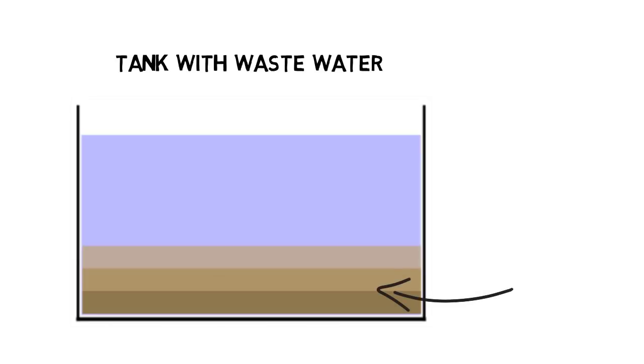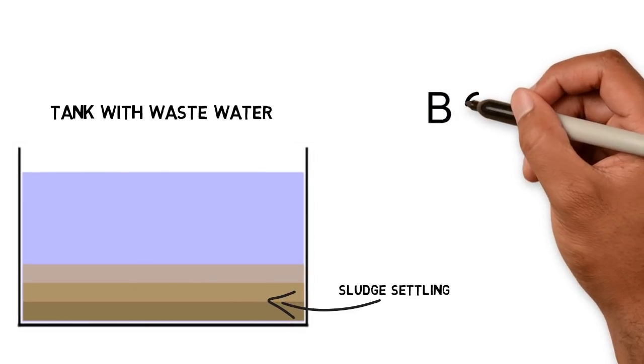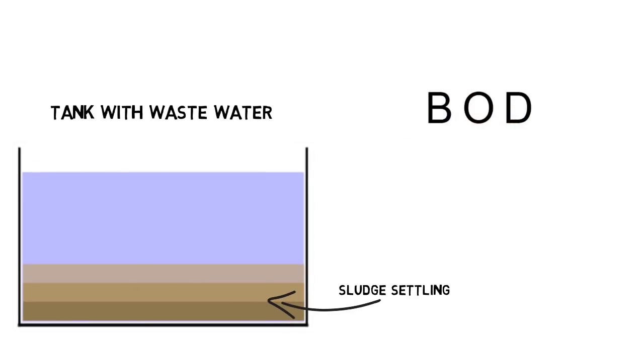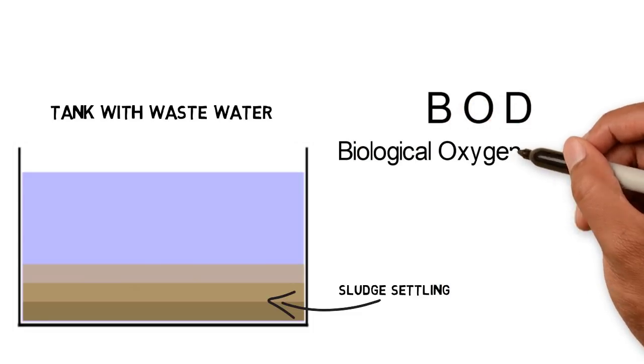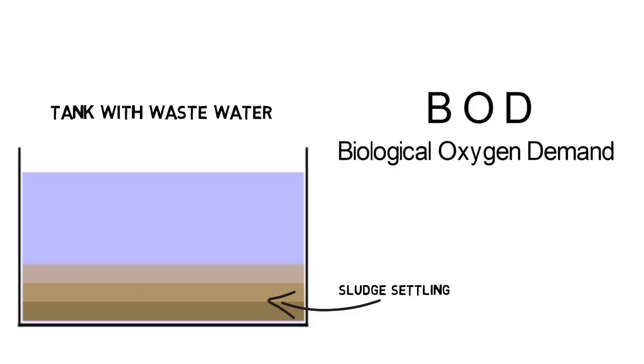For decomposition, bacteria consume dissolved oxygen in the waste water. The needed amount of dissolved oxygen is called BOD, Biological Oxygen Demand. BOD is therefore used as an indicator for the degree of water pollution.